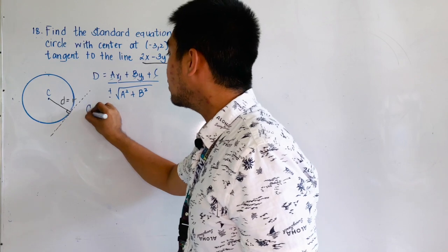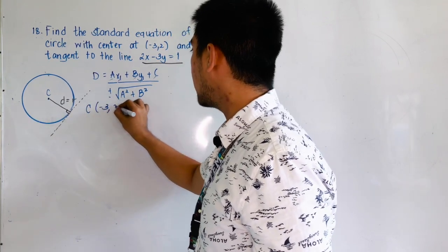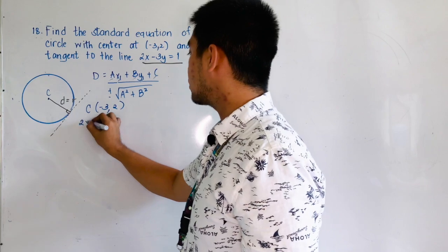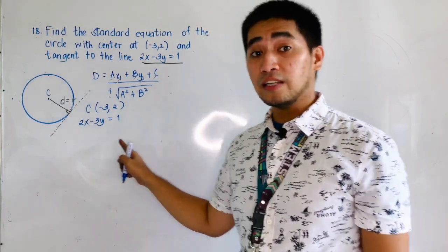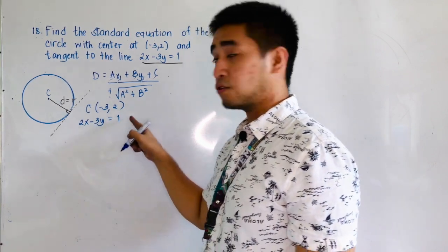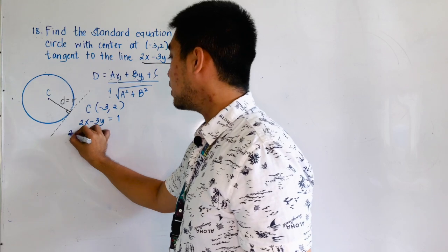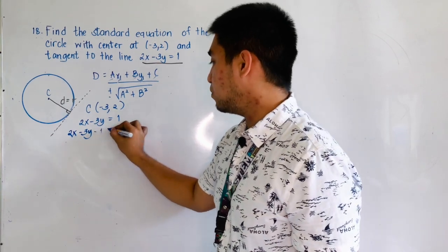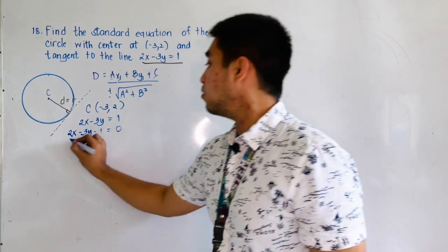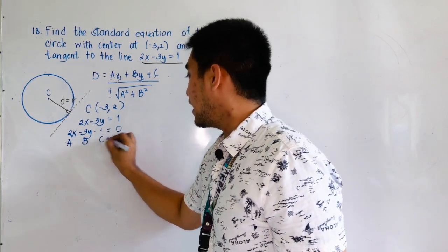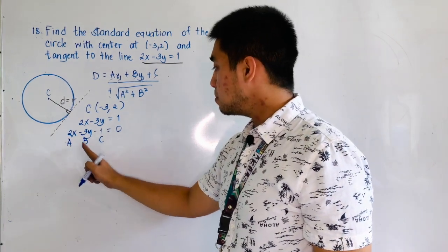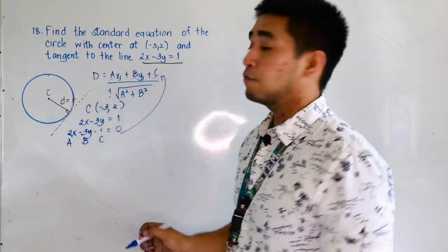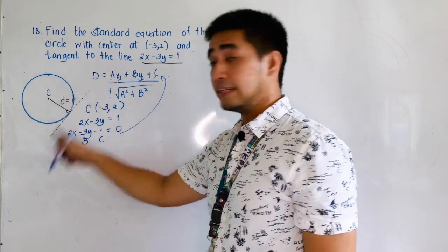Our center is located at negative 3 and positive 2, and it is tangent to the line 2x minus 3y equals 1. This equation is not yet in general form, so we transpose 1 to the other side: it becomes 2x minus 3y minus 1 equals 0. We now have a, b, and c to substitute into our distance formula.